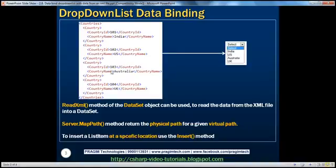If you look at the sample data, we have four countries: India, US, Australia, and UK. And if you look at the drop-down list on the right-hand side, we are displaying all four countries. In addition, there is another list item called 'select', which is not present in the XML file. How to add this element to the drop-down list — we'll look at that in a demo.